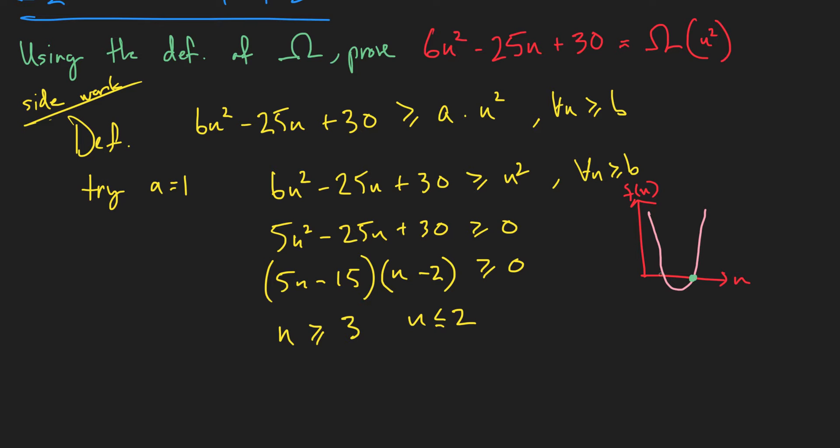And we found these points here. This is 3 and this is 2. Now, we chose n greater than 3, because it's positive here.